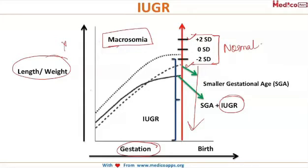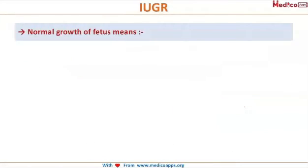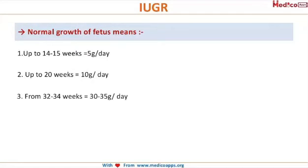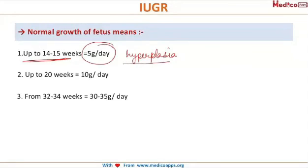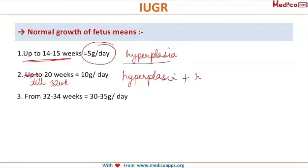Now let us see how the fetus grows during the entire period of gestation. In the first 15 to 16 weeks, only hyperplasia of cells occurs and weight increases by 5 grams per day. Thereafter, in the second phase of growth extending up to 32 weeks of gestation, there is both hyperplasia — an increase in cell number — as well as hypertrophy of the cells.